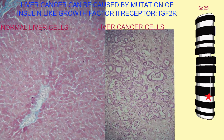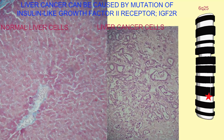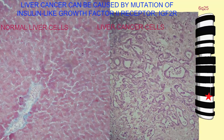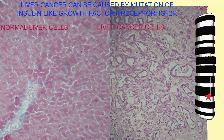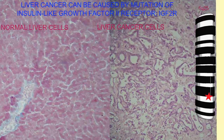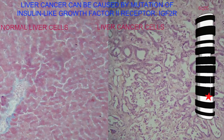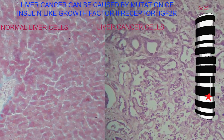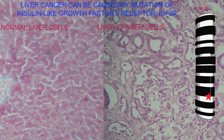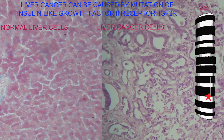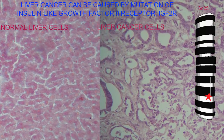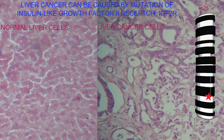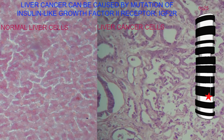Mutations which overproduce growth factors or mutations in the growth factor receptors can sometimes be associated with cancerous growth, because they promote inappropriate cell division. And liver cancer can be promoted by mutations in the insulin-like growth factor 2 receptor.